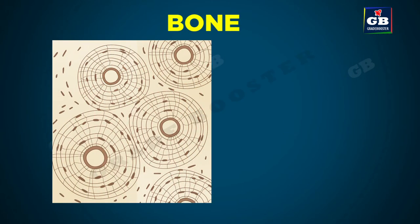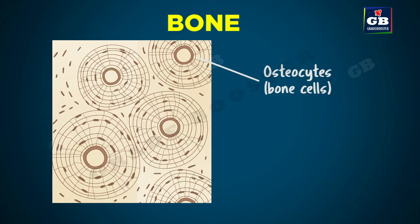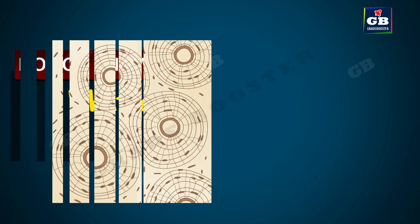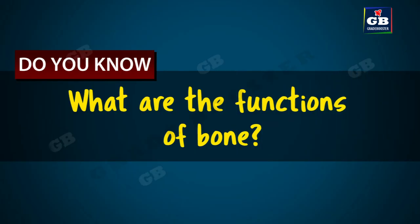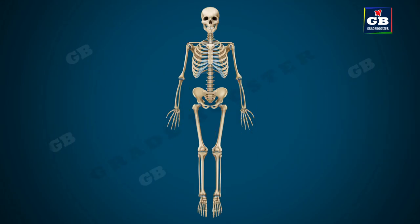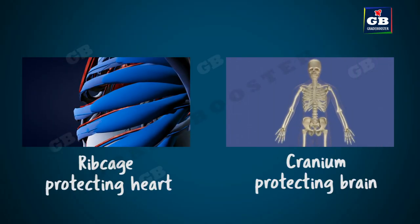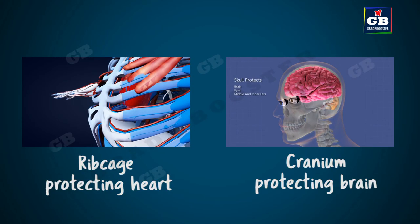Now let us see the other type of connective tissue, that is bone. Bone is a strong and non-flexible tissue. The cells of the bone are embedded in a hard matrix that is composed of calcium and phosphorus compounds. It forms the supportive framework of our body, holds the muscles tight and helps in movement, and forms hard cases that protect the sensitive internal organs.